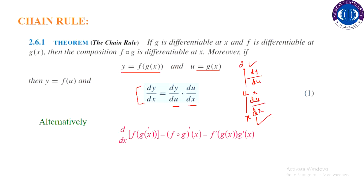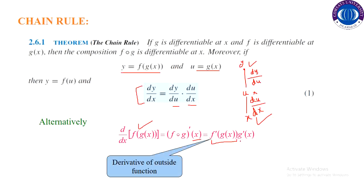Alternatively, we can see it this way: y is f of g of x. The derivative of f composed with g is basically the derivative of the outside function multiplied by the derivative of the inside function. This is derivative of outside function multiplied by derivative of inside function — the same thing explained two ways.